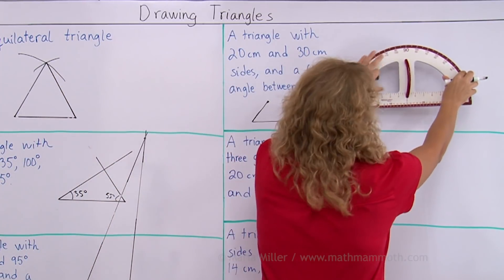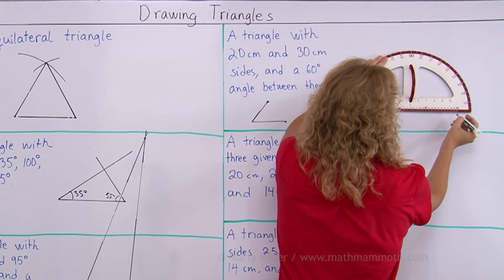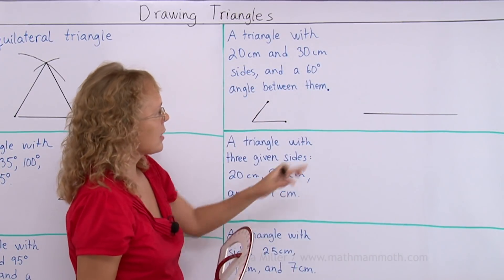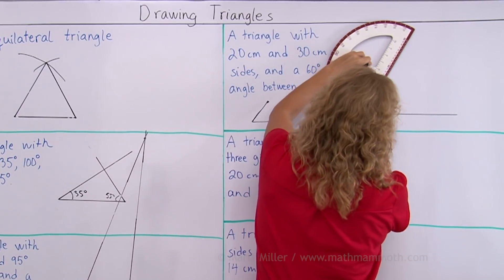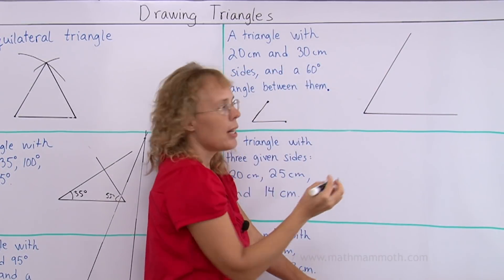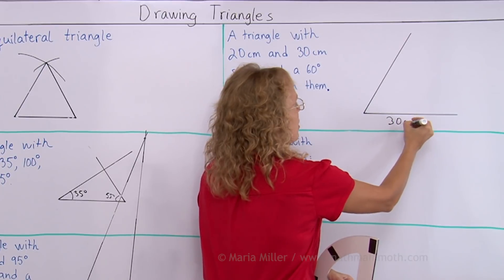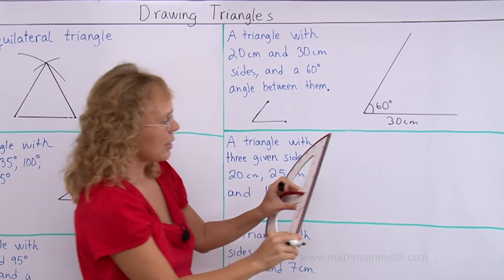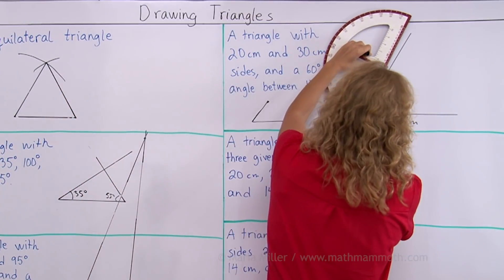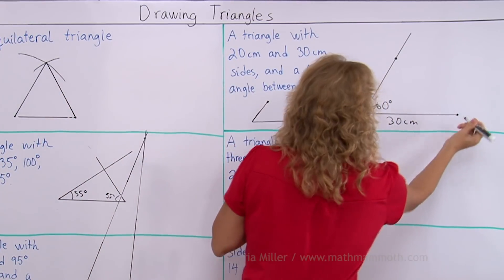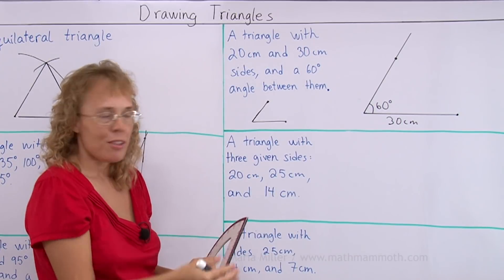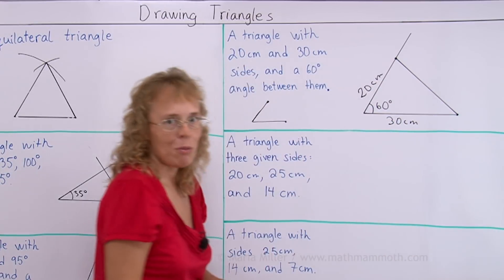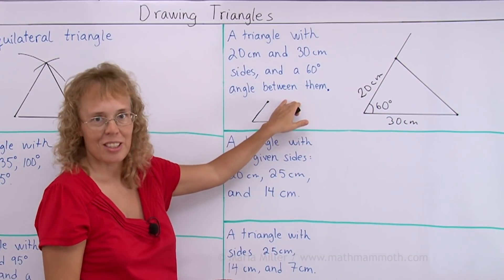So let's say I draw in first of all the 30 centimeter side here. And then 60 degree angle there. This was 30 centimeters. This was 60 degrees. And then I will measure the 20 centimeter side here. And so now I will draw in the third side and I don't have any choices. So there is only one unique triangle using this information.